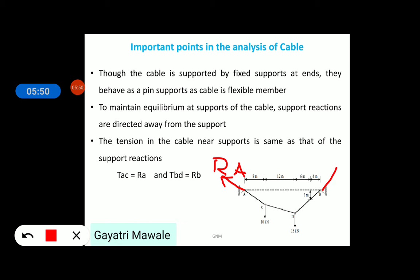This is suppose reaction at A point. And this is how reaction at B point will act. Say reaction RB. To maintain equilibrium at supports of the cable, support reactions are directed away from the support.